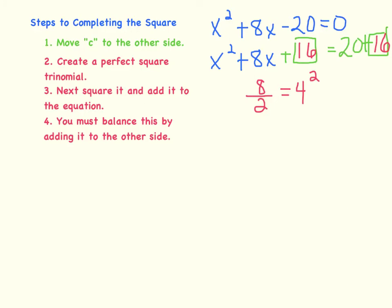Now actually, we didn't just do step number 2 — we did step numbers 2, 3, and 4. Because creating the perfect square trinomial is what we did when we took b and divided it by 2. The third step says to square it and add it to the equation — we squared 4, and 4 squared is 16, so we added it. And then step 4 says we have to balance it by adding it to the other side of the equation as well.